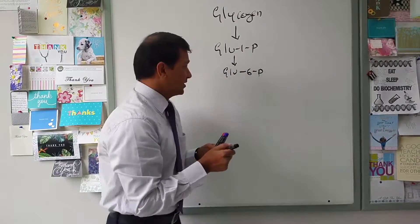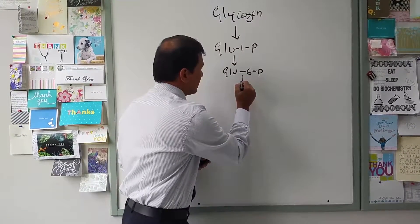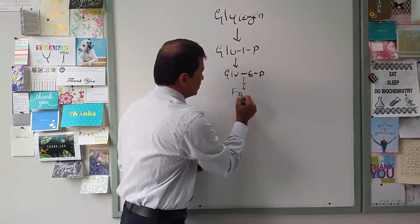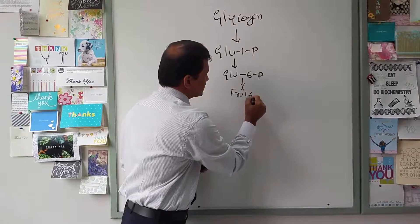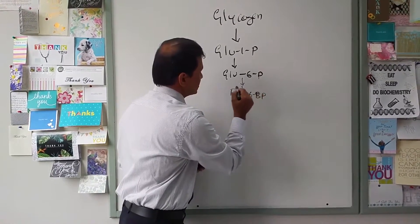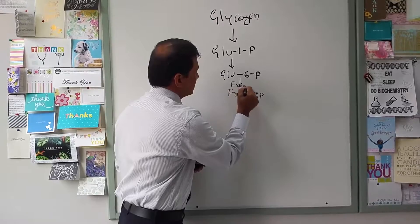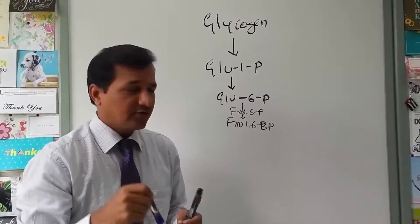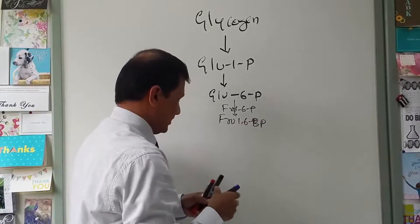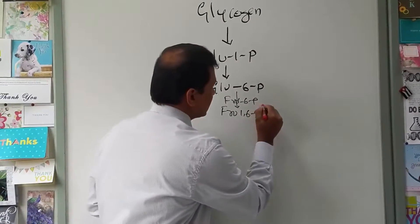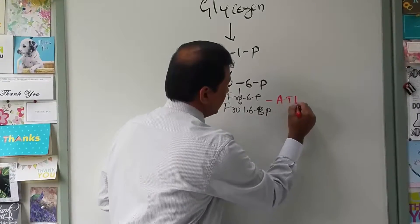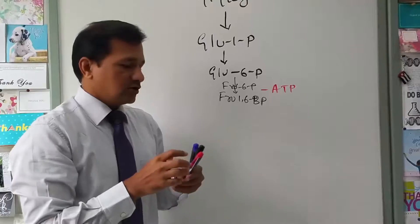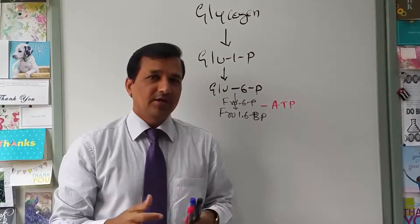Glucose-6-phosphate undergoes glycolysis. At the phosphofructokinase-1 step, fructose-6-phosphate is converted to fructose-1,6-bisphosphate, and during this step 1 ATP is consumed — shown here as minus 1 ATP.